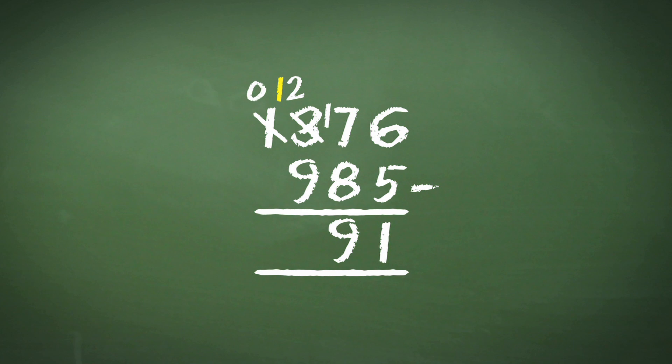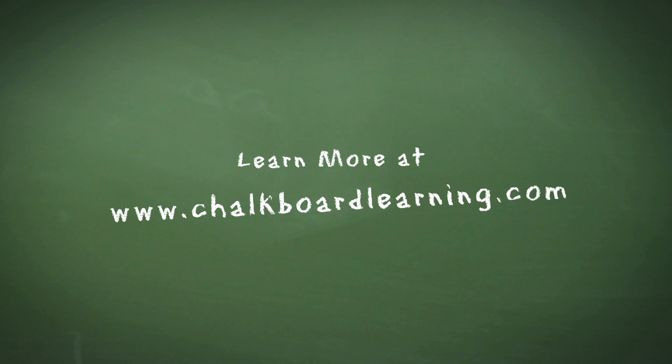and leave a 0 in the thousands column. 12 minus 9 gives us 3, and given that we now have 0 left in the thousands column, we have our final answer of 391.